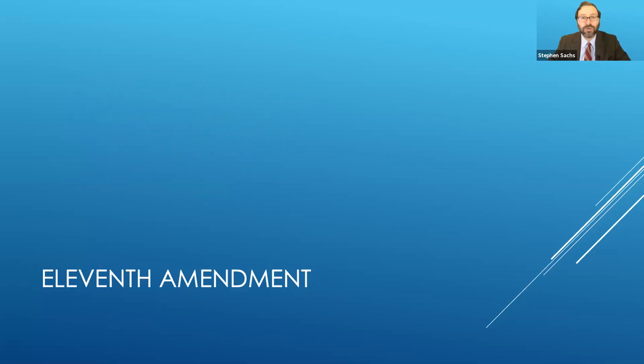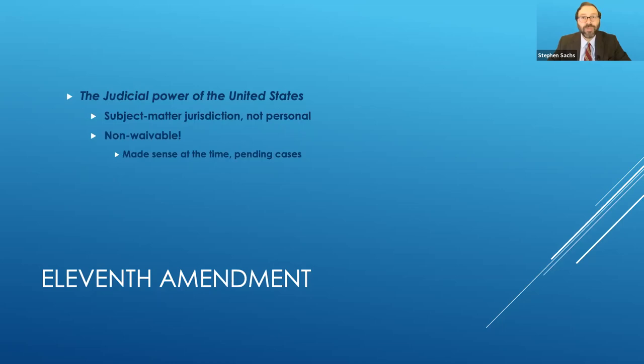Let's start off line by line. Judicial power of the United States. That is a clear limit on the subject matter jurisdiction of federal courts. It is not about their personal jurisdiction like the common law immunity. As a result, it's non-waivable because as everyone knows, you can't waive subject matter jurisdiction. That made sense at the time because there were a number of pending cases where process had already been served on various states by private citizens under Chisholm.